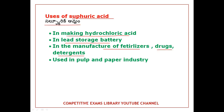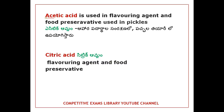Sulfuric acid is used in the pulp and paper industry. Next is acetic acid. Acetic acid is used as a flavoring agent and food preservative, for example in pickles.